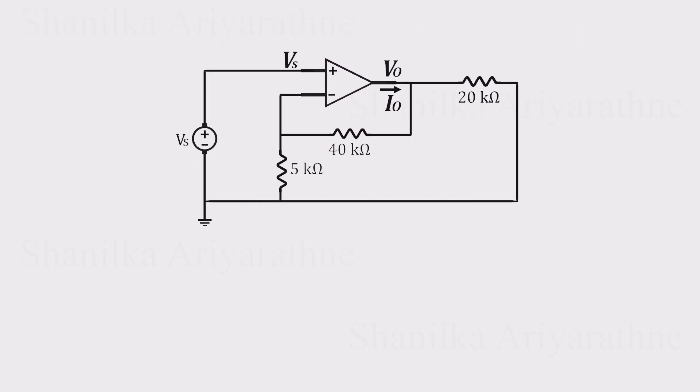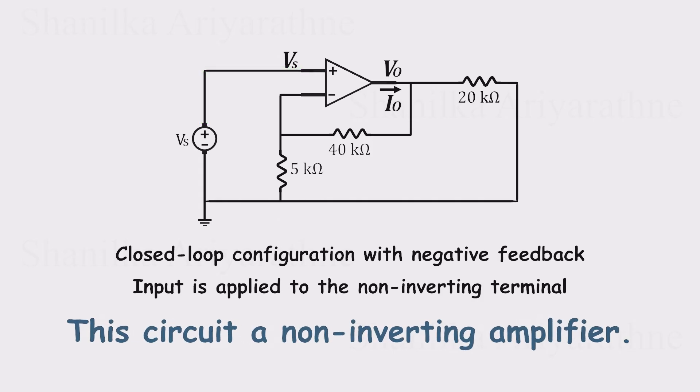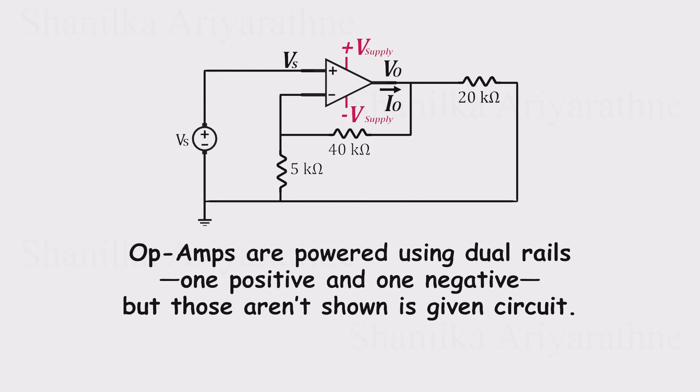This is a classic setup. The op-amp is in a closed-loop with negative feedback, and the input goes to the non-inverting terminal, the one with the little plus sign. In other words, it's a non-inverting amplifier. Quick clarification before we dive in. Don't mistake the voltage source in the diagram for the op-amp's power supply. In real life, op-amps run from dual rails, one positive, one negative. But those aren't shown here. The source labeled VS is just the input signal.